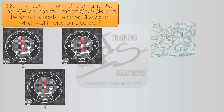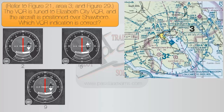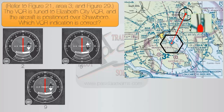If we look at the map, figure 21, area 3, the first thing we need to do is find the Elizabeth City VOR, followed by the city of Showboro. Next, we'll draw a line between the VOR and our city. As we can see, if we were flying from the VOR to Showboro, we would need a heading of 030. Since we are over Showboro, we need to fly the reciprocal, 210, to get to the station.